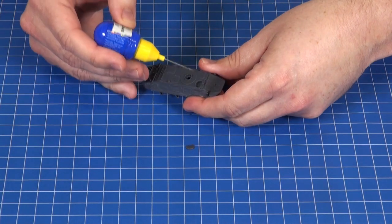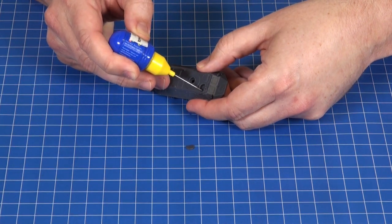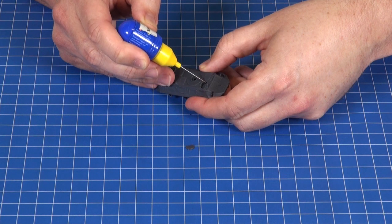After attaching the rear hull I like to glue in the commander's hatch. Now you can choose to glue this in open or shut. Today I'll be gluing it shut.